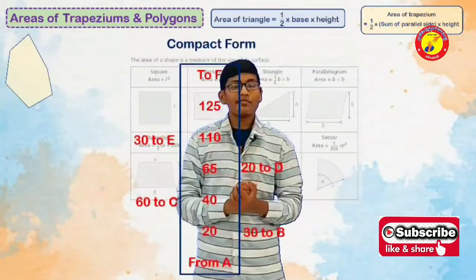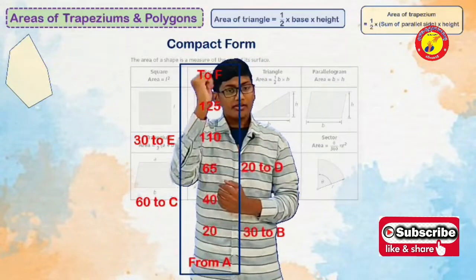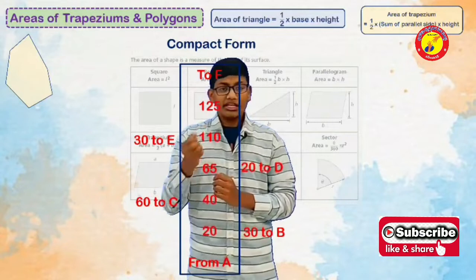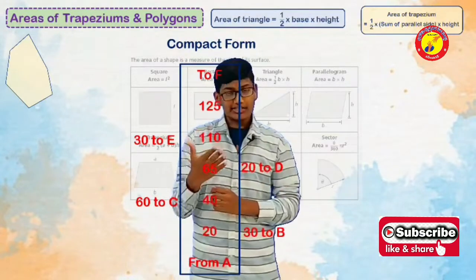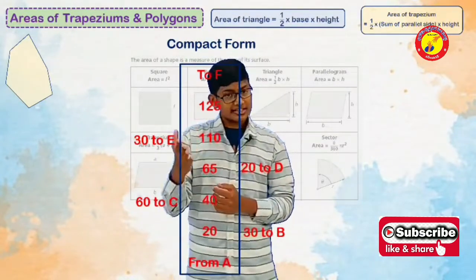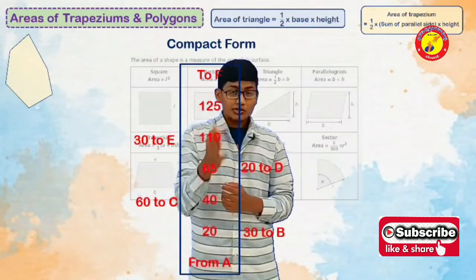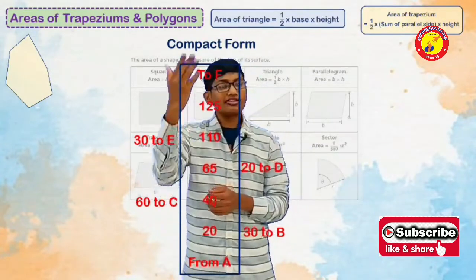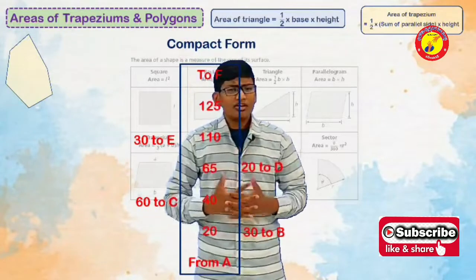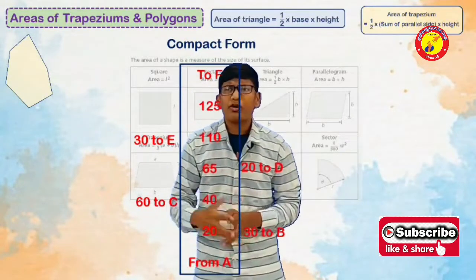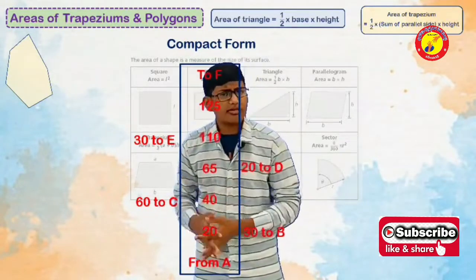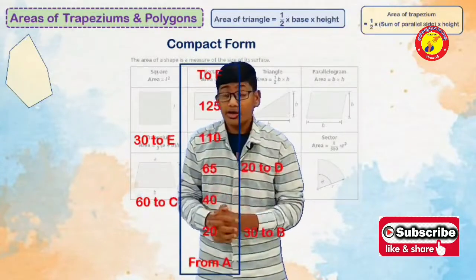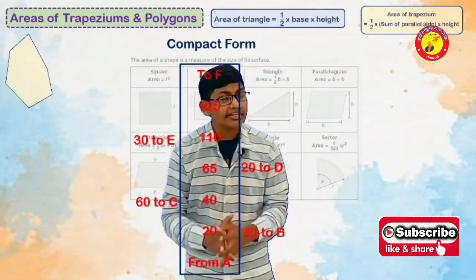They have given a compact form from A to F. In between they have given 20, 30 to B, 40, 60 to C, 65, 20 to D and 110, 30 to E, and they have given 125. Now, after seeing this you might be thinking what is this compact form, what is from A, what is to F. To solve this problem we need to understand this table cleanly and carefully.